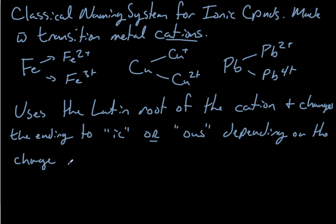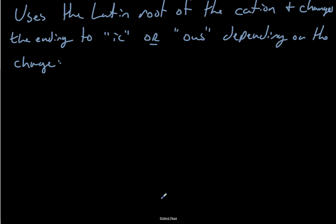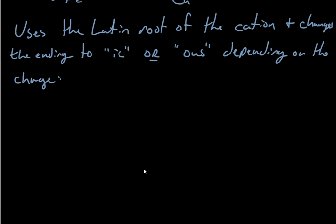So what does that mean? Well, let's use iron as an example. Does anyone know what the Latin root for iron is? Someone said it. It is ferrum. So ferrum is iron. That's where the symbol Fe comes from originally.